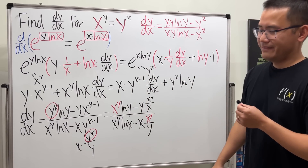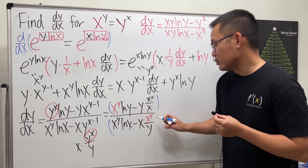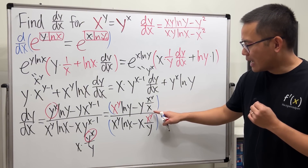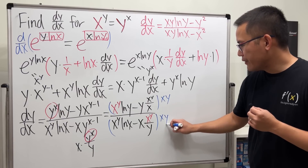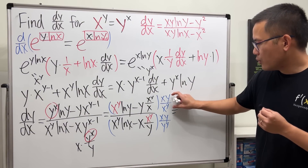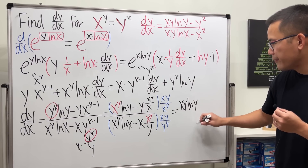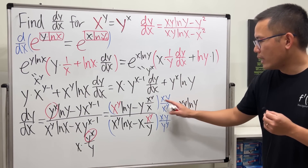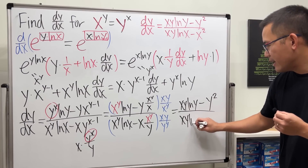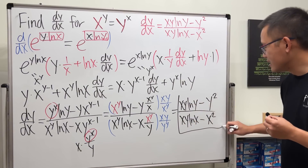Now everybody has x to the y, so we divide everything by x to the y. We have a small fraction, and the lowest common denominator for this and that is xy. Dividing by x to the y: x to the y cancels, giving us xy times the remaining terms. Things cancel nicely — x and x cancel, y and y give y squared on one side; on the other, xy ln x minus x and x cancel, y and y give x squared. And we're done.